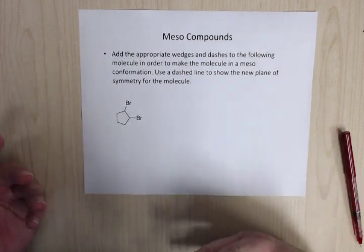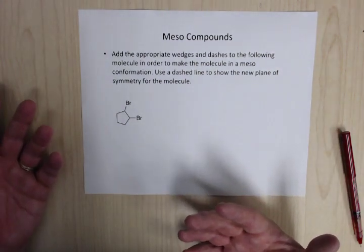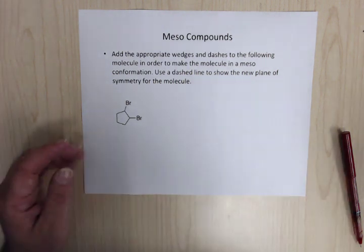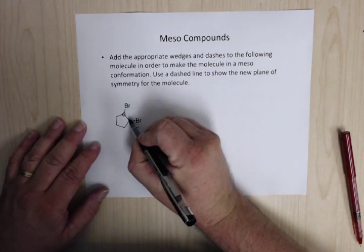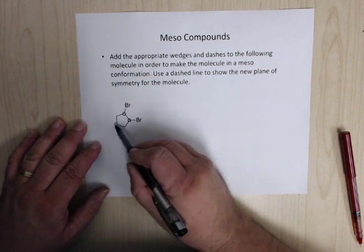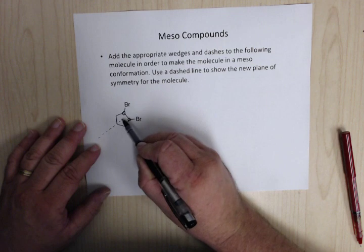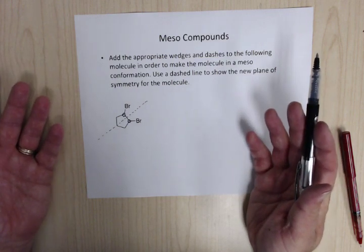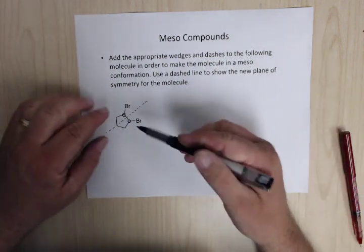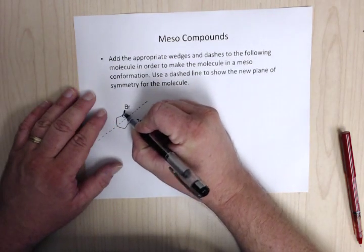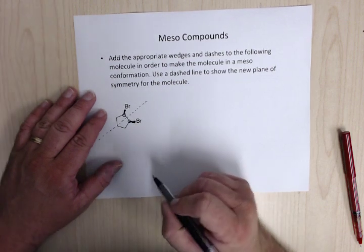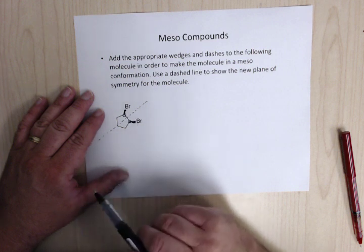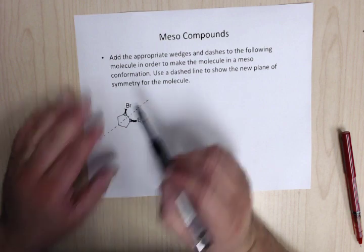For meso compounds: I'll give you a molecule and you have to add wedges and dashes at the chiral centers to make it meso. The chiral centers are here. To create the plane of symmetry, draw a dashed line through the middle and place the substituents so that both chiral centers have their groups on wedges, or both on dashes — this creates the plane of symmetry that makes the compound meso. Good luck.